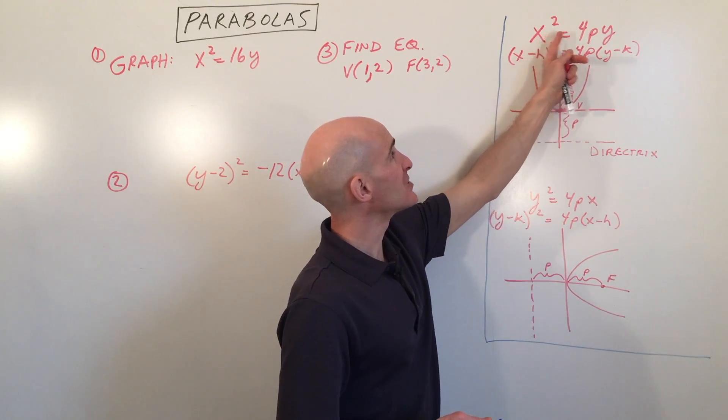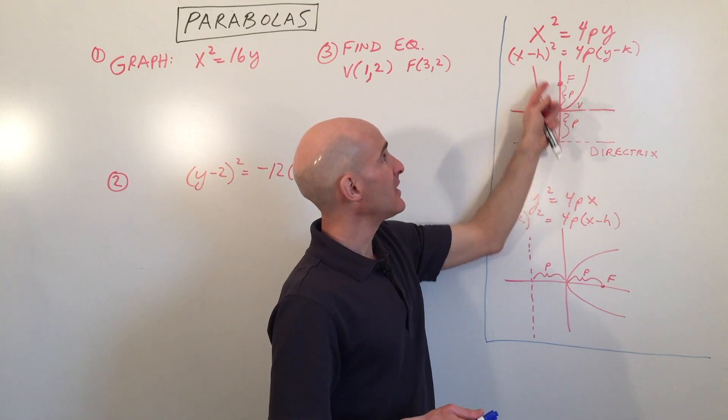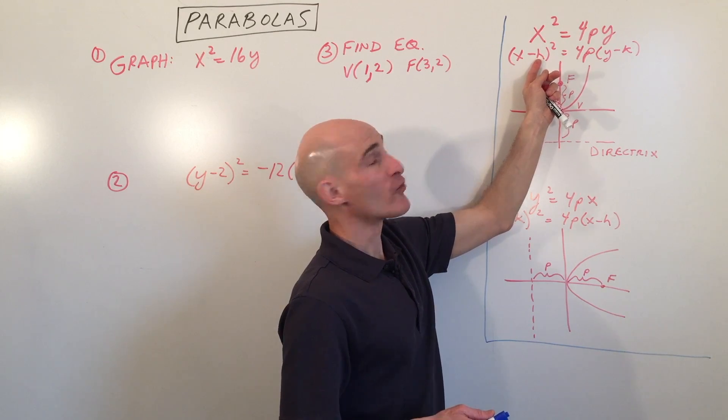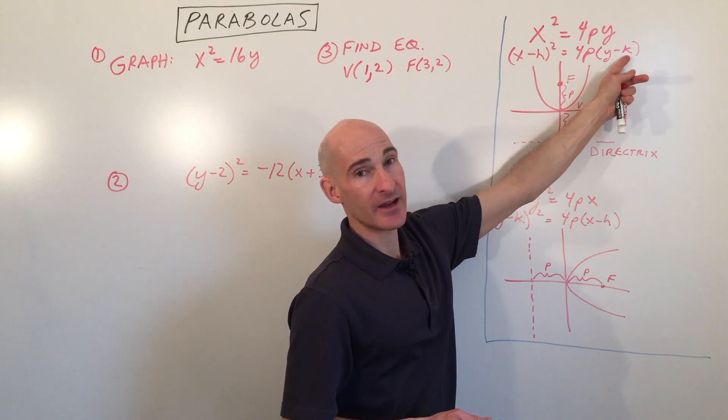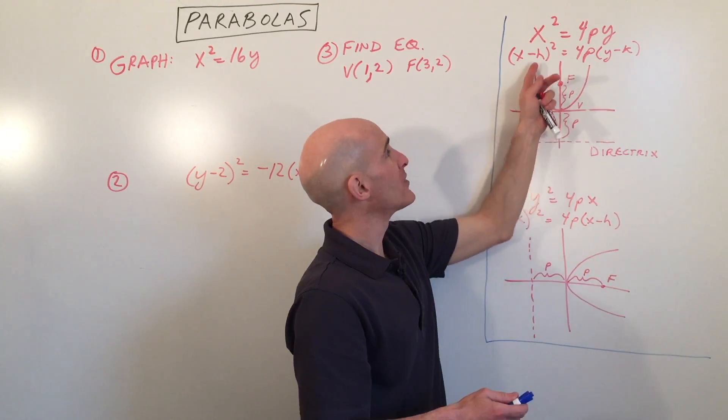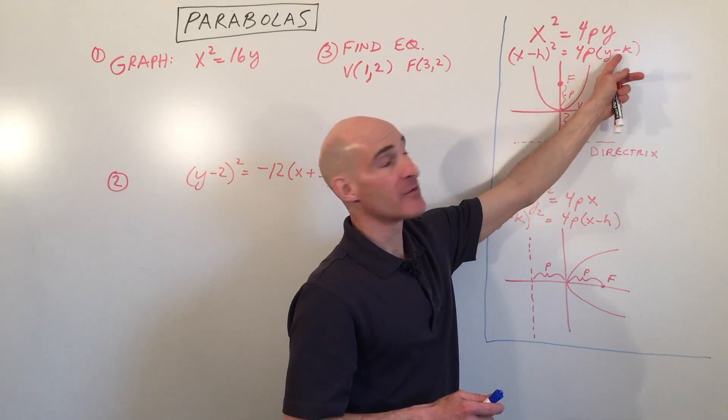Now, this equation on the top here is just where the vertex is centered at the origin. If it's like this bottom one here, it's been shifted right h and up k. So the number of this group with the y is going to affect the y direction. The one of this group with x is going to affect the x direction, but opposite from the sign.